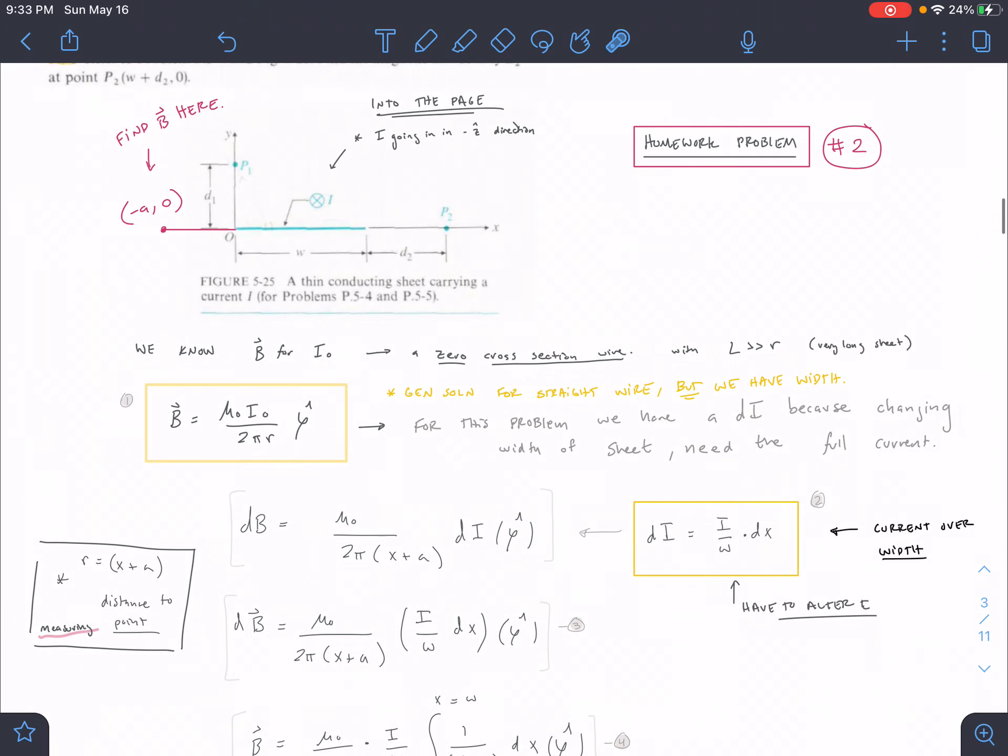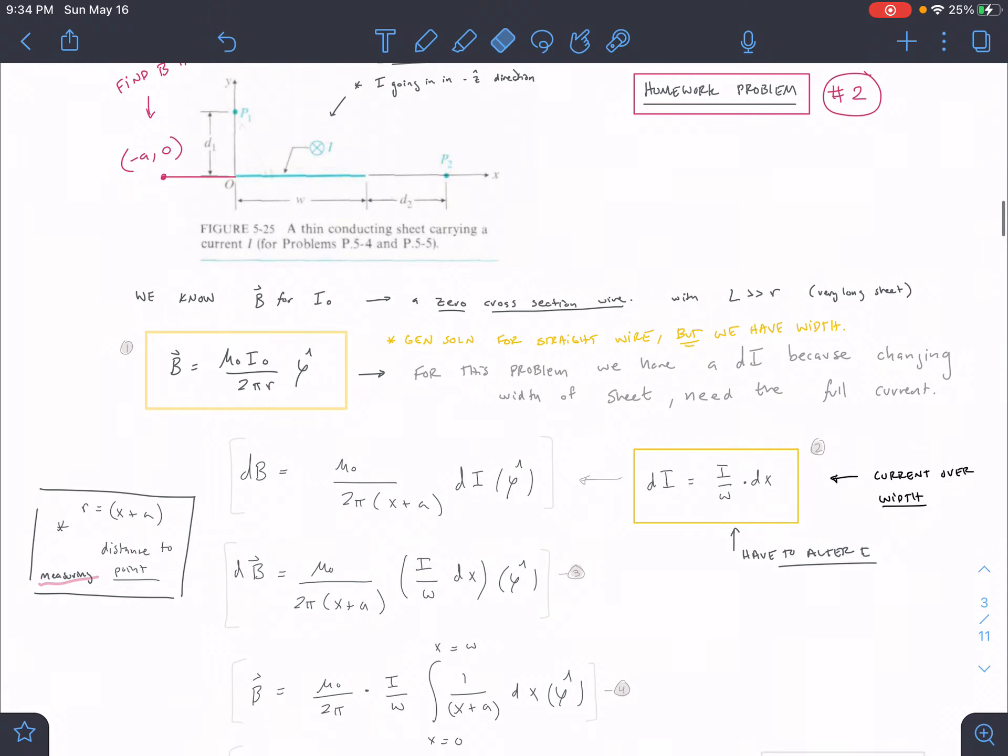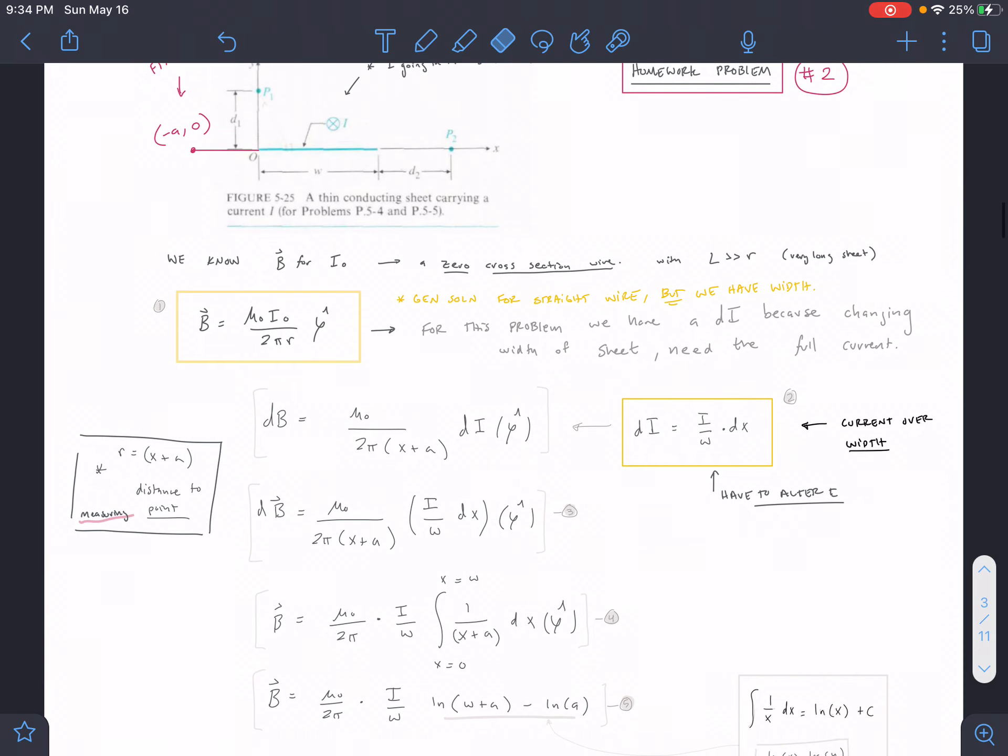We are modeling our B field in this phi hat direction, rotating. If you have our right hand rule, our B field is kind of rotating around this sheet of current. Just kind of as a general idea for where it's going.